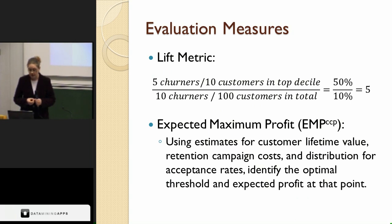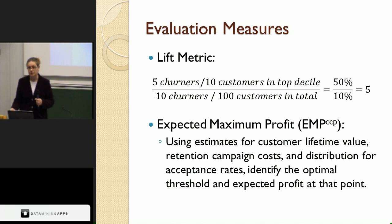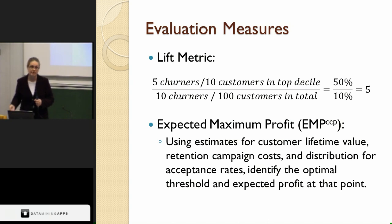Another commonly used measure is the lift metric. You divide your predictions into deciles or any division of customers and compare the highest-ranked group to the overall rate. For example, with 100 customers total, if you look at the top 10 customers ranked most likely to churn and five of those are actual churners, that's 50%. With 10 churners out of 100 in the original dataset — 10% — your lift metric would be five. You can compare lift across different models to see which best ranks your customers.